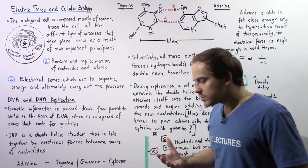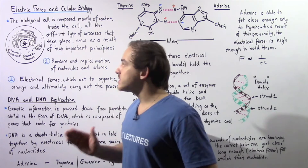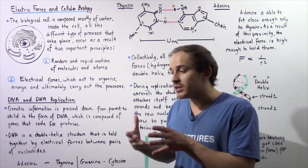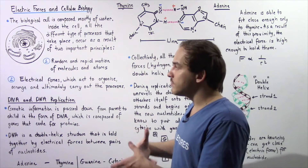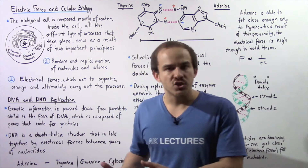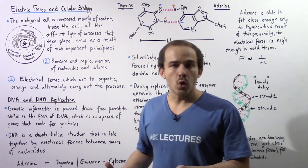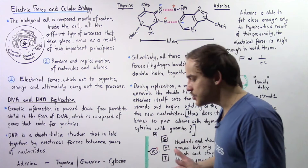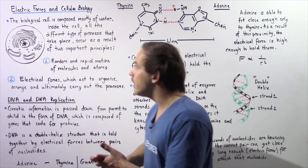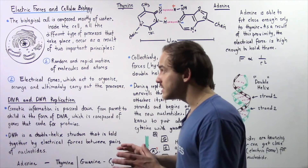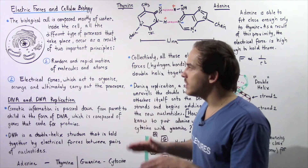The human cell is composed of many types of organelles and molecules and compounds. The majority of the human cell is composed of cytoplasm, which is a fluid-like material that contains mostly water. We can think of the human cell as a sea of water molecules flying about with random and rapid motion, colliding with one another and exchanging energy. The one thing that organizes this motion of molecules within the human cell are electrical forces.